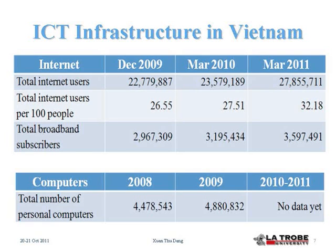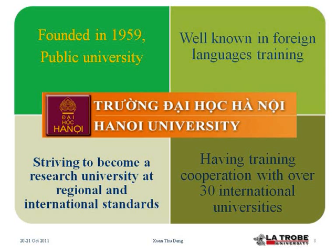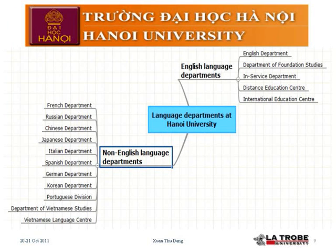This table gives you some statistics about the ICT infrastructure in Vietnam. You can see that the total number of internet users increases very fast. Taking part in our case study is Hanoi University, a public university founded in 1979, very well known for foreign language training. It has training cooperation with over 30 international universities in the world, and its main mission is to become a research university at regional and international standards.